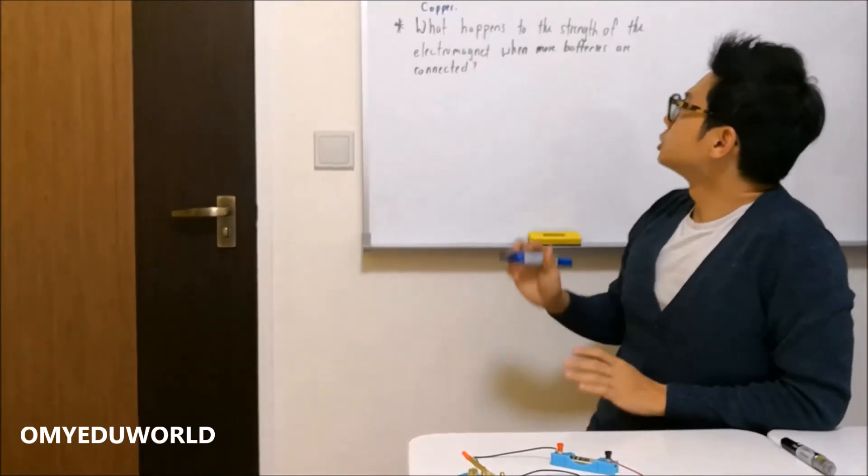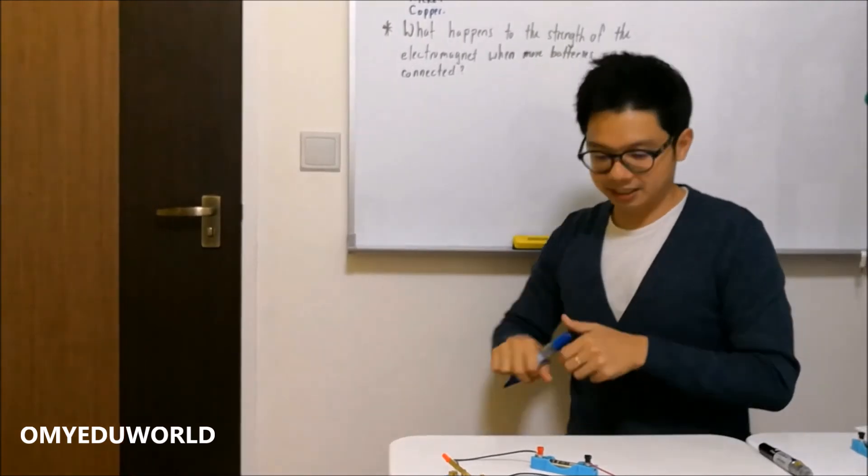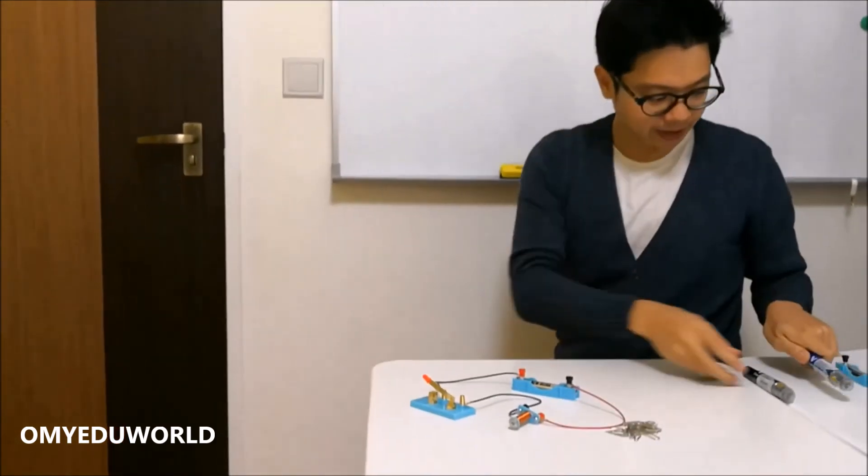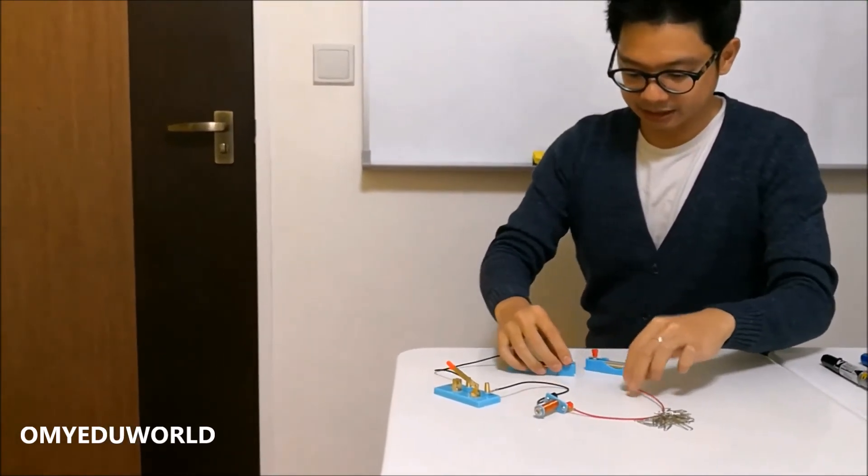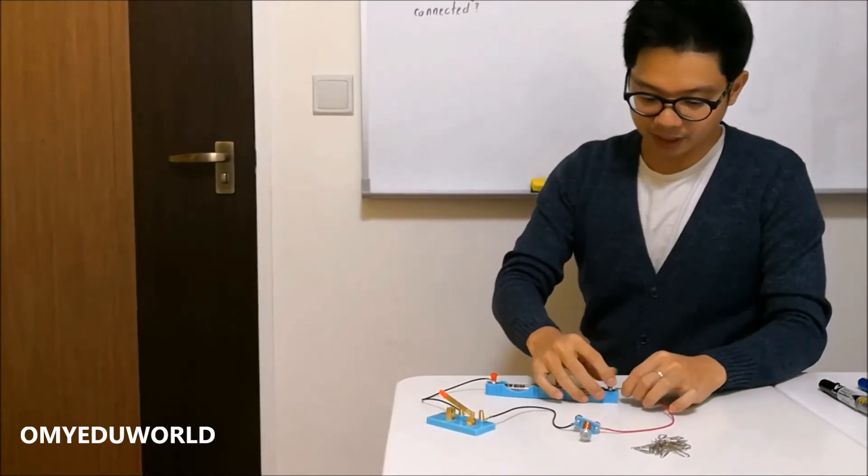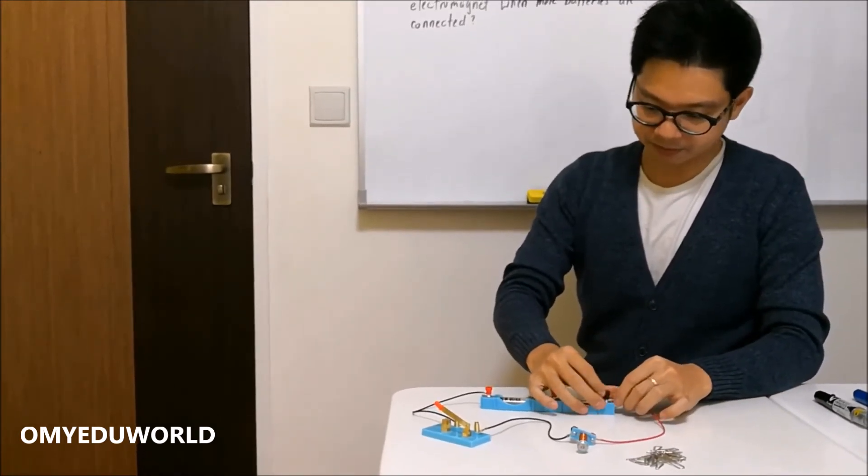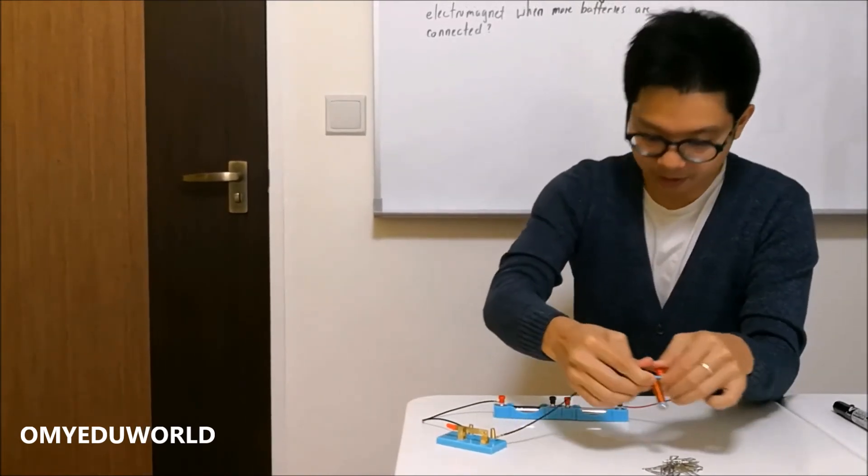So now let's look at the second question: What happens to the strength of the electromagnet when more batteries are connected? Right now I have one. I'll connect the second one, and we will see whether it can pick up more paper clips.